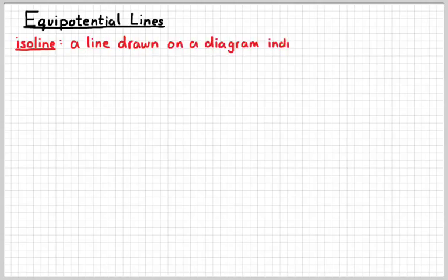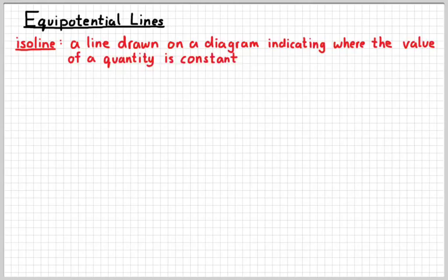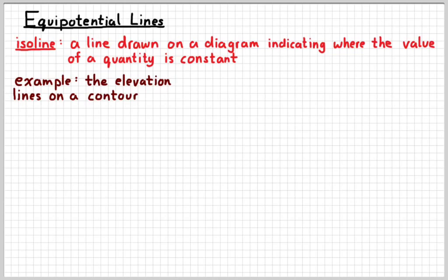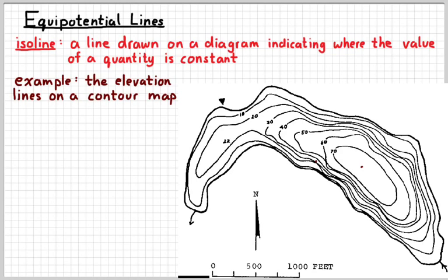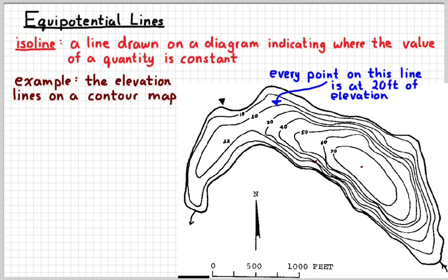Graphically, we can do that by defining the equipotential line. An equipotential is a special case of an isoline. An isoline is a line on a diagram, could be many different kinds of diagrams, indicating where the value of a quantity is the same. An example that you're probably already familiar with are the elevation lines on a contour map. So contour maps look like that, and all those lines on the map represent points which have the same height or elevation. So every point on this line represents, or has a height of 20 feet.